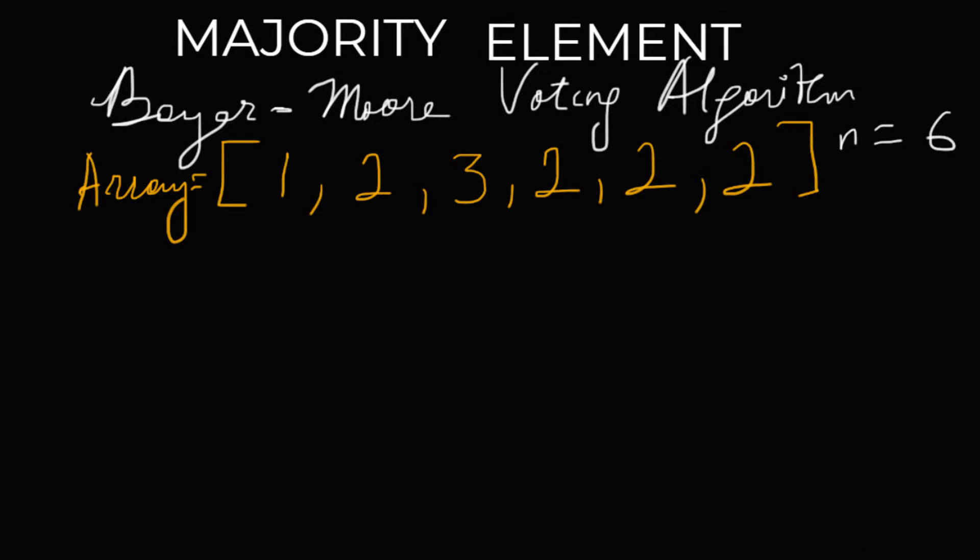Now, there's a slight caveat: we have to change the potential majority element whenever the counter is zero. Whenever the counter is zero, we pick a new potential majority element — that would be the current element we're iterating through. So why do we pick a new candidate when the counter is zero? That simply means that so far we've seen other elements that appear more times than the potential majority element we initially chose, and that element can no longer be the majority element, since other elements appear either more than or equal to the number of times our candidate appears. It will be very clear as we go through the example.